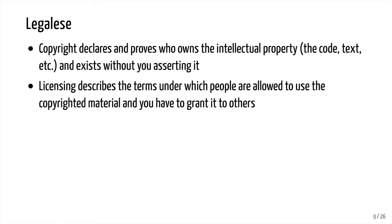A copyright declares and proves who owns the intellectual property — whether it's the code, the text, whatever. This exists without you actually asserting it; if you produce something, you own the copyright. But it's still good to assert it explicitly. Licensing, on the other hand, describes the terms under which people are allowed to use the copyrighted material, and you have to grant it to others. If you haven't granted it to others, then it's closed — it's yours.